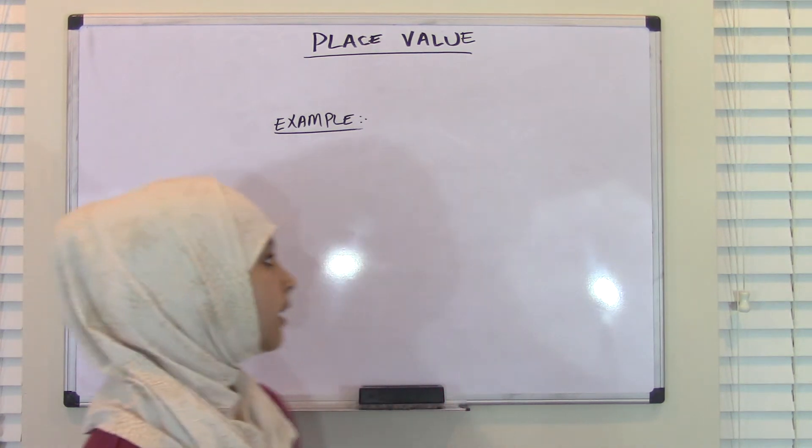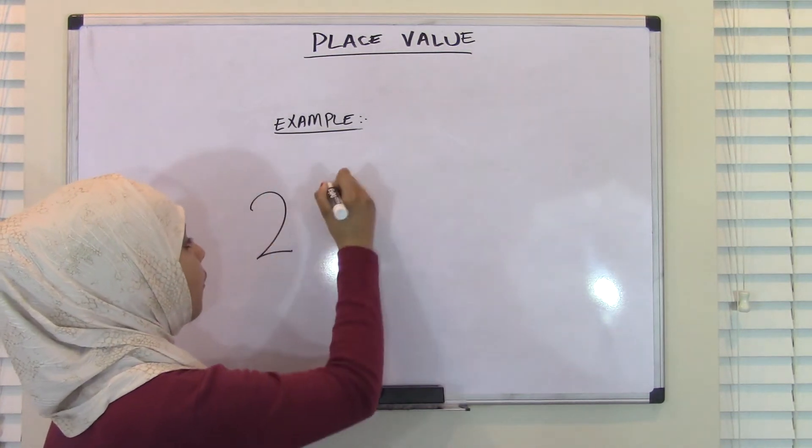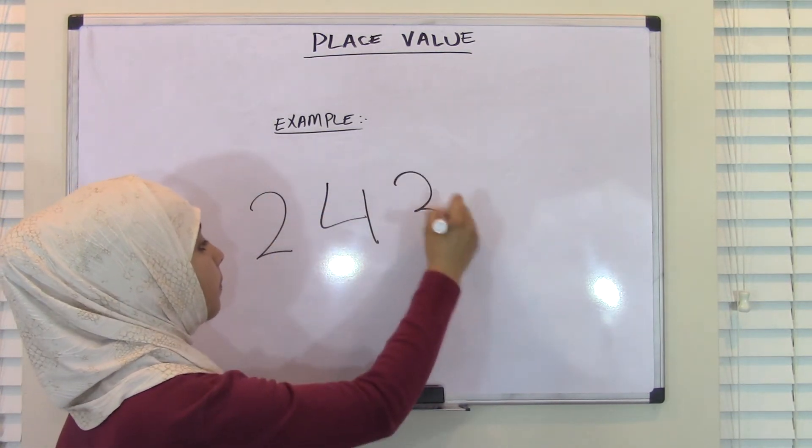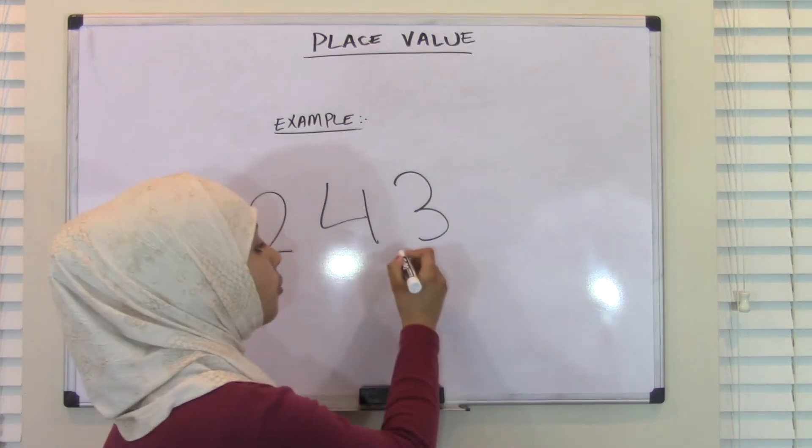So if we take a look at an example here, for example, we have 2, 4, 3. Now, we want to figure out the place value of the digit 3.